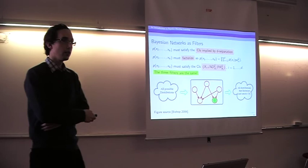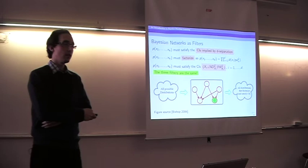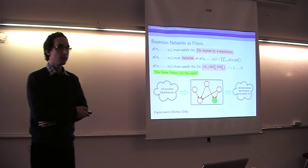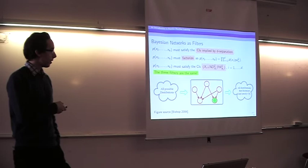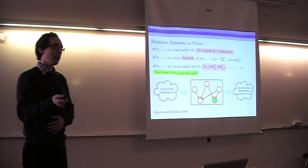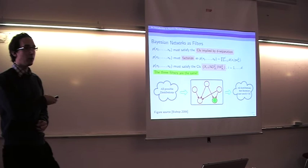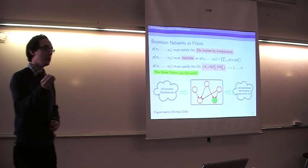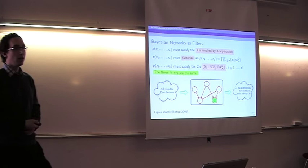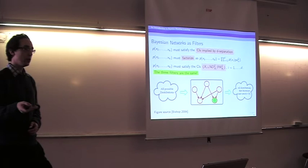Finding maximum cliques is in general NP-complete for arbitrary graphs. However, in Markov graphical models used in practice these graphs will have a particular structure and won't be NP-complete. We will be able to use computationally efficient algorithms to find the maximal cliques in these types of graphs.